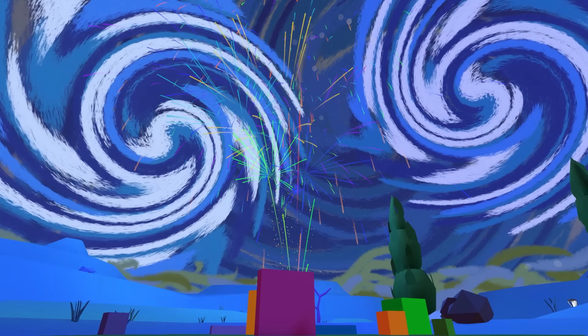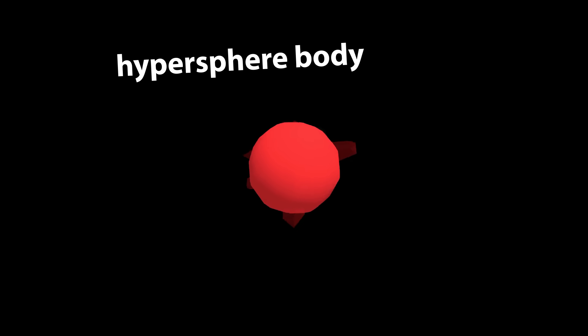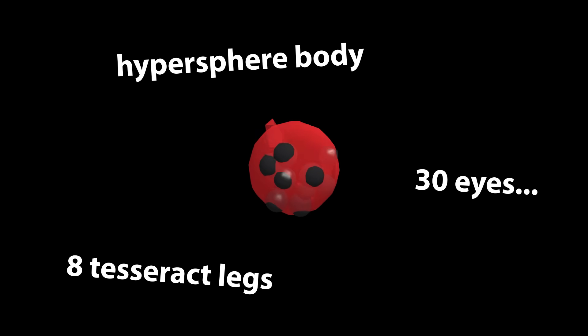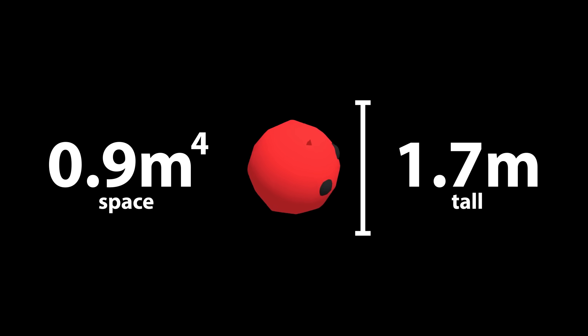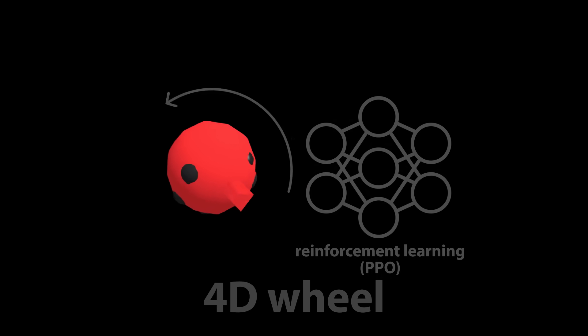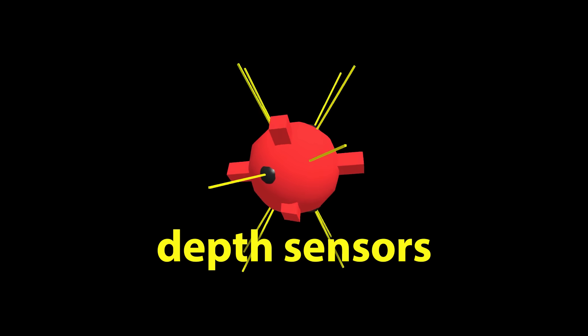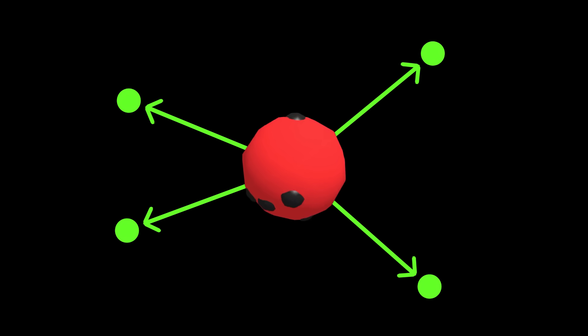Alright, I feel like we've arrived at a great place — physically, mentally, geometrically — and we can now fully appreciate what comes next: the AI. Since this is 4D, our AI will have a 4D body composed of a hypersphere, eight tesseract legs, and 30 eyes — basically a 4D spider. It's 1.7 meters tall and takes up roughly 0.9 meters hypercubed of space. Our eight-legged 4D friend will run a small neural network trained with reinforcement learning, controlling itself by applying torque. It sees things using depth sensors through its 30 eyes, and it's rewarded by how well it moves in the commanded direction.